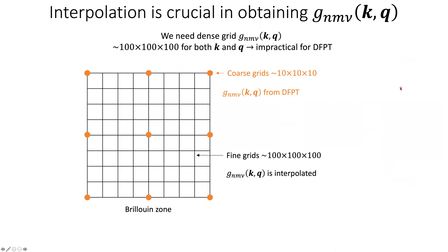Interpolation is crucial in obtaining the g's. For typical dynamics and charge transport analysis we need a very dense grid of g's, typically of order 100×100×100 for both the K and Q grids. This is impractical to compute by DFPT alone. So we compute the electron-phonon matrix elements on a coarse grid of order 10×10×10, denoted as orange markers in the Brillouin zone schematic, and then use interpolation to go to finer grids of order 100×100×100.